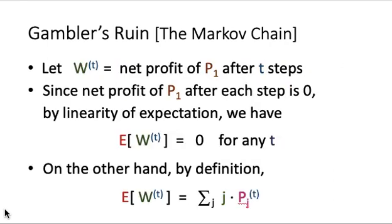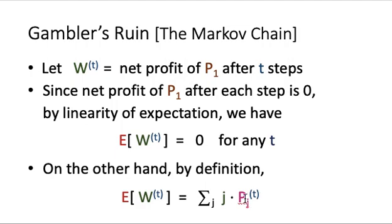Because of this, by linearity of expectation, the expected net profit after t steps in total equals zero — it is the sum of the expected net profit for each individual step, from step 1 through step t. Adding them up by linearity of expectation gives us the expected value of the total net profit over t steps equals zero.